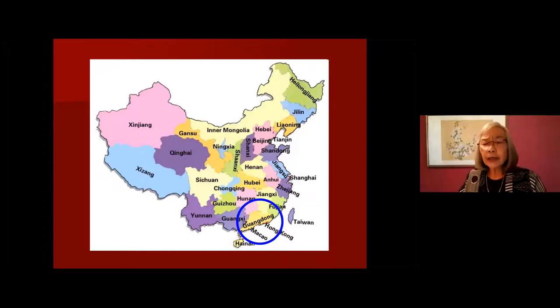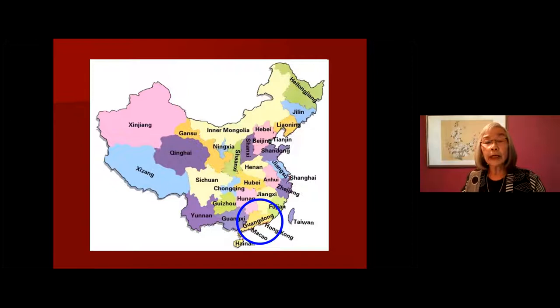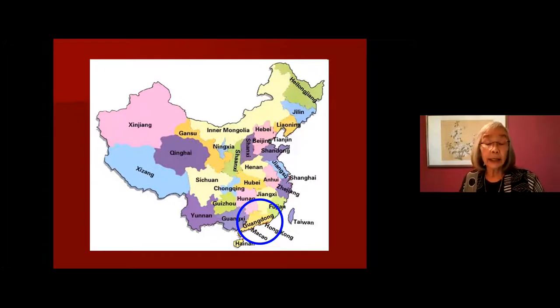Layered on top of that was lots of banditry, civil wars, and a corrupt government imposing high taxes. The capital of Guangdong province was called Canton at the time — that's where you get Cantonese language, Cantonese food, Cantonese customs.